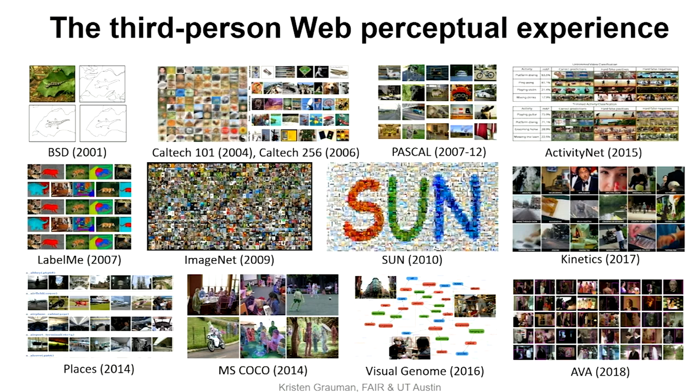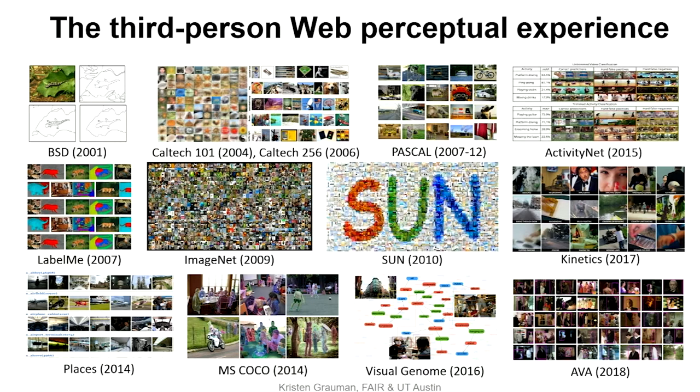What you'll notice though is that these instances of images and video have a certain form. They're typically downloaded from the web and make their way into these computer vision or AI datasets, and this means they represent something special. In fact, they're curated by human photographers originally, and so they represent this curated, disembodied moment in time from a third-person or spectator's perspective — the moments that were important enough to take a photo or video, and now they get into the hands of our AI agents.